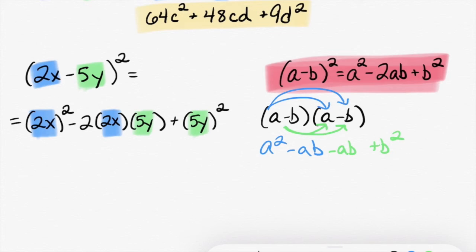The first thing that I have is 2x squared, which gives me 4x squared. Very good. Minus 2 times 2 times 5 is 20. And then I have an x and a y, so 20xy plus 25y squared. And there's my answer.